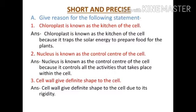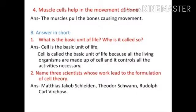Question three: cell wall gives definite shape to the cell. Answer: cell wall gives definite shape to the cell due to its rigidity. Question four: muscle cells help in the movement of bones. Answer: the muscles pull the bones, causing movement.